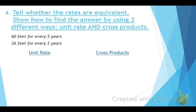For section four, tell whether or not the rates are equivalent. On your quiz or test the instructions will say the same. We'll show two different ways. We're comparing 60 feet for every five years and 26 feet for every two years. The first method is the unit rate.